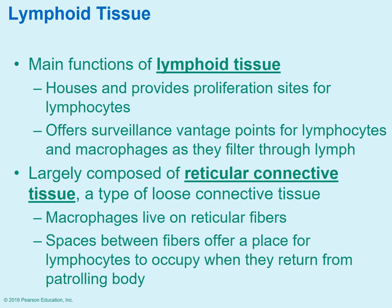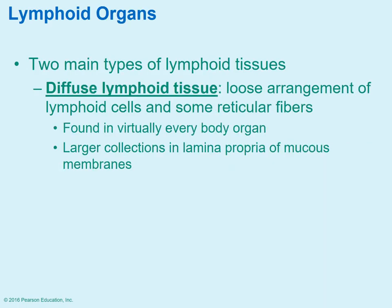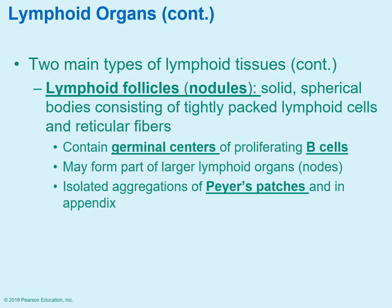The function of the lymphoid tissue is to provide a place to store and house lymphocytes and allow them to multiply, and as mentioned, they act as surveillance and filter the lymph as it moves through. Diffuse lymphoid tissue is a loose arrangement of lymphoid cells and fibers found throughout the entire body. Lymphoid follicles or nodules are areas of very tightly compacted lymphoid cells. Some of these are known as Peyer's patches, which are associated with the small intestines.